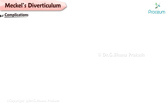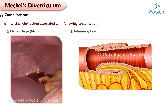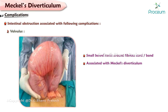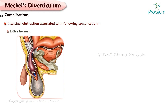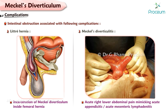Complications: Meckel's Diverticulum can cause intestinal obstruction and has been associated with the following complications — hemorrhage; intussusception, referring to the invagination of a part of the intestine into itself; volvulus, where the small bowel twists around a fibrous cord or band often associated with Meckel's Diverticulum, such as those from the tip of the diverticulum to the peritoneal lining of the abdominal wall or other adhesions; incarceration of a Meckel's Diverticulum inside a femoral hernia; and Meckel's diverticulitis, where patients present with acute right lower abdominal pain mimicking acute appendicitis or acute mesenteric lymphadenitis.